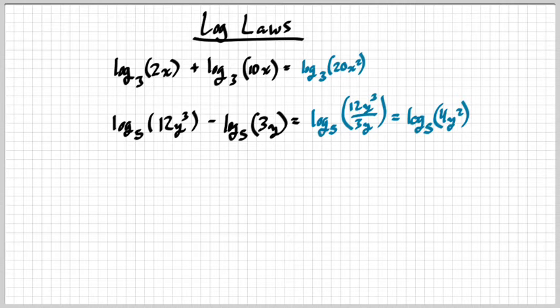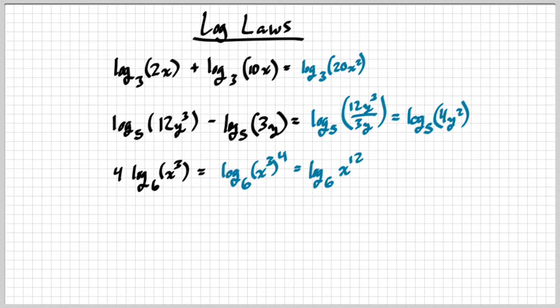Last one. We have 4 times log base 6 x to the third, and pretty much what you do is whenever there's something multiplying to the log, you can just raise it to make that multiplication into a fourth power or make it into a power of what's inside. And so this would become log base 6 x to the 12th power. And the reason for that is,